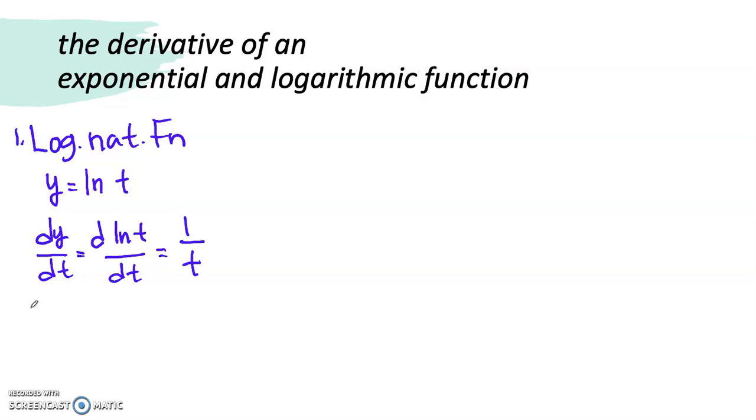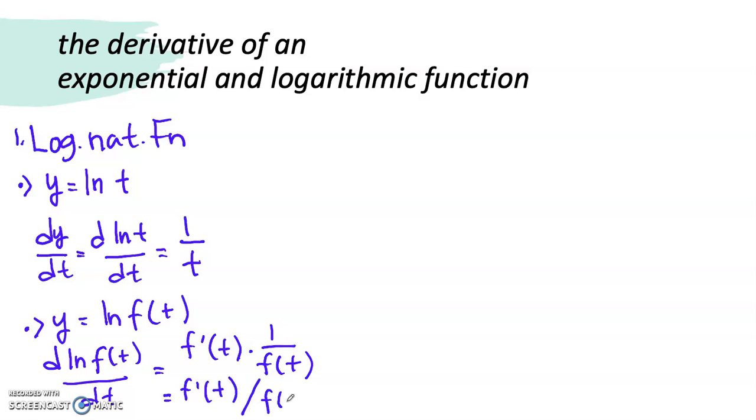And in general, if the t is a function, so if you have y equals to ln of a function of t, then d ln(f(t)) over dt is just f'(t) times 1 over f(t), or sometimes it is written as f'(t) over f(t).